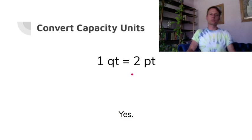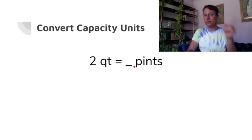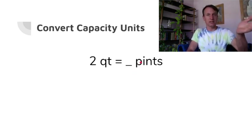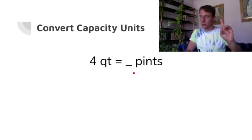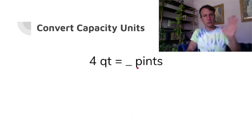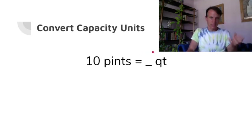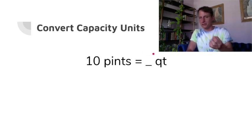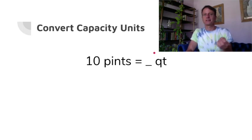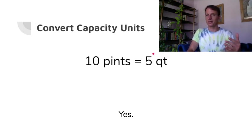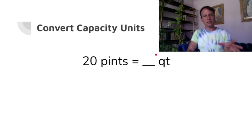Yes, two — there are two pints in a quart. So two quarts is four pints, and four quarts is eight pints — just multiply by two because there are two pints in a quart. Ten pints going the other way: every two pints makes a quart, so divide by two — you'd have five quarts.